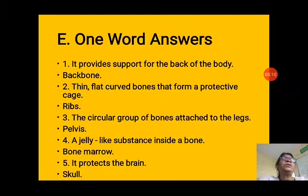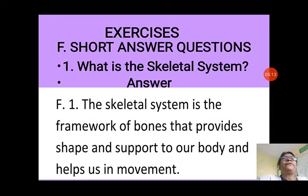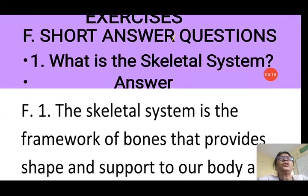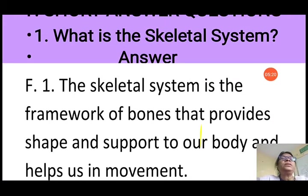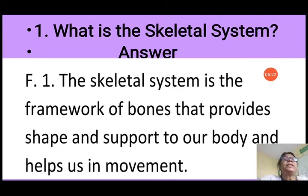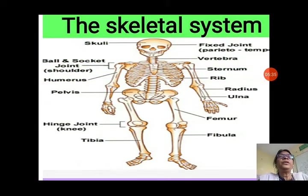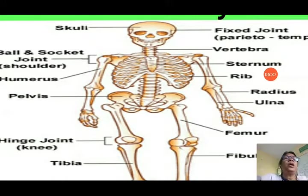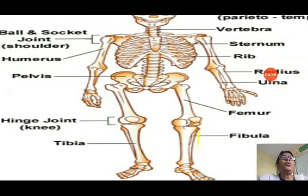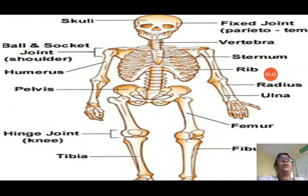Exercise F — Short answer questions. Question 1: What is the skeletal system? The skeletal system is the framework of bones that provides shape and support to our body and helps us in movement. You can see the picture of the skeletal system — it is a framework of all the bones that gives shape, support, and allows movement through attached muscles.